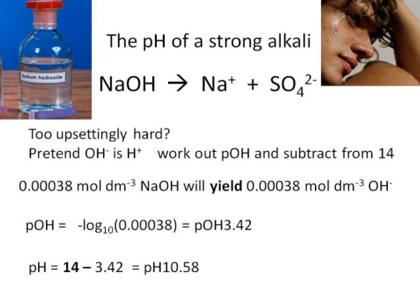All we do therefore is we take that number away from 14, and that will give us a pH value of 10.58. So just calculate the pOH instead of pH and subtract from 14, and that will give you your correct answer. Much easier as far as I'm concerned.